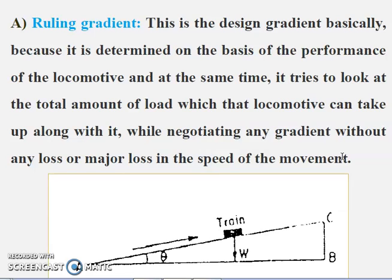Ruling gradient is the steepest gradient that exists in a section. It determines the maximum load that can be hauled by a locomotive with the maximum permissible speed. We can calculate the extra pull required by the locomotive using this triangle.